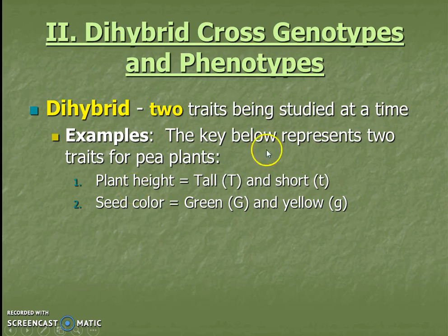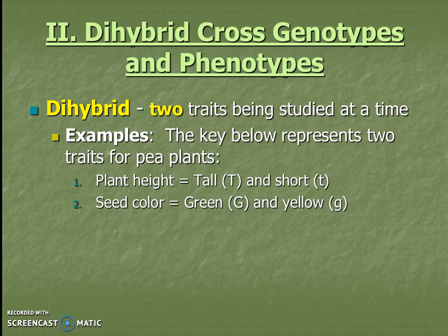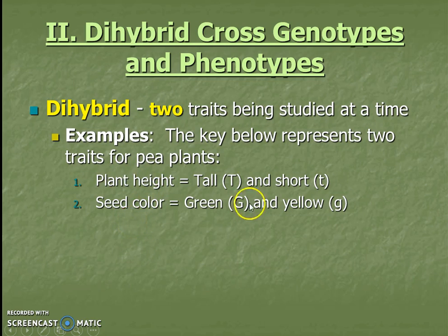The trait for plant height uses big T for tall (dominant) and little t for short (recessive). Seed color uses big G for green (dominant) and little g for yellow (recessive). We now know from Mendel's laws that these will migrate separately due to segregation, the two different traits will be independent of each other, and some alleles are dominant.